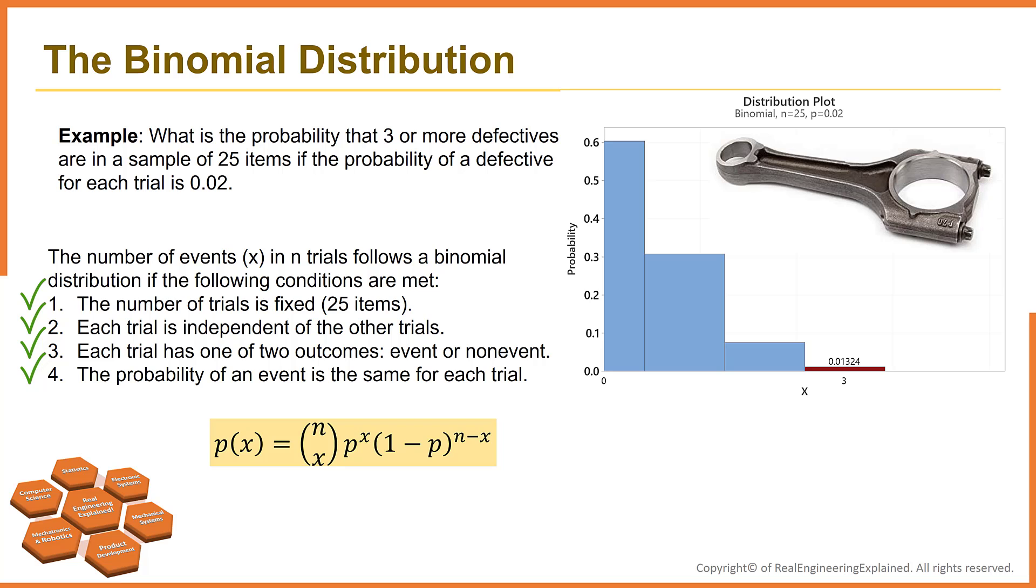So, we can plug in those numbers in this equation and find the probability for x defective items. We are looking for at least 3 defectives. So, x could be 3, 4, 5, till 25. So, we need to find the summation of all of them. The cumulative probability will be 0.01324, or 1.32%.